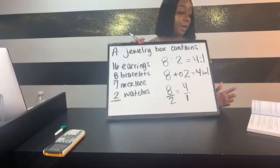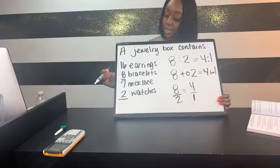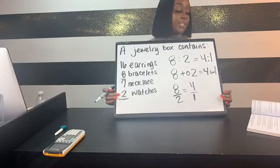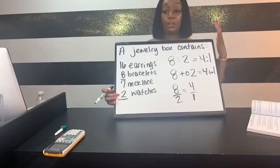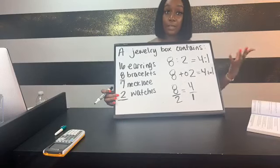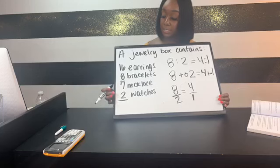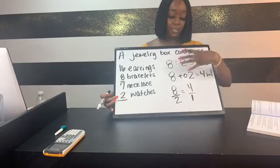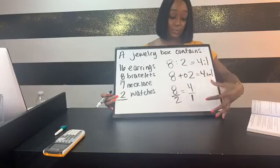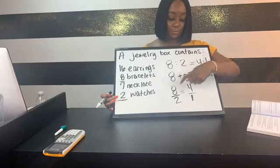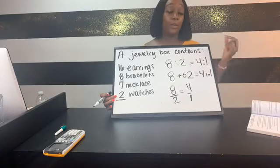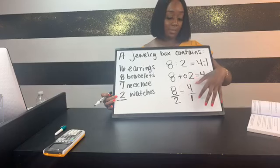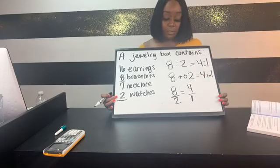Again, the question said: a jewelry box contains 16 earrings, 8 bracelets, 7 necklaces, and 2 watches — and the first question asked: what is the ratio of bracelets to watches? First things first, you understand what's being compared. In this instance it was bracelets and watches. I wrote it three different ways — a colon, the word 'to', or fraction form — so you can see it could be any one of those three forms. The most important thing is that you treat them exactly like fractions, and they always have to be reduced down to their lowest terms.